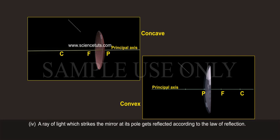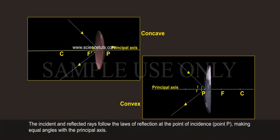Fourth, a ray of light which strikes the mirror at its pole gets reflected according to the law of reflection. The incident and reflected rays follow the laws of reflection at the point of incidence, point P, making equal angles with the principal axis.